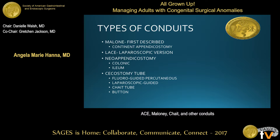There are several different types of conduit options. The first, and probably most common, is an appendicostomy — frequently called a Malone, after the first person to describe it. It's basically a continent appendicostomy. There's also a laparoscopic version that's pretty common nowadays, with or without a continence valve. For patients who don't have an appendix, a neo-appendix can be made using either a colonic flap or an ileal conduit.